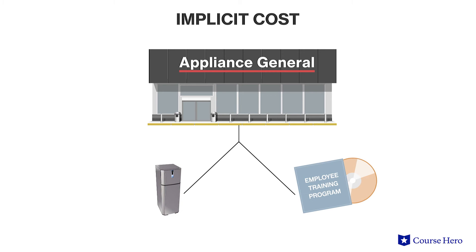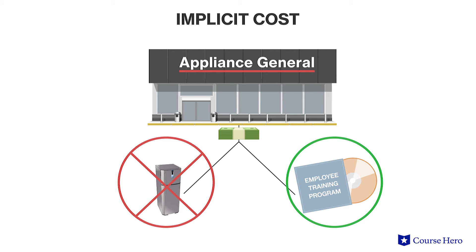For example, a company that makes household appliances might make a choice about how to spend available money. The company might choose not to invest the money in producing refrigerators, but instead spend the money on investing in employee training. When the company gives up the opportunity to make money by producing and selling refrigerators, this is part of the cost of investing in employee training.